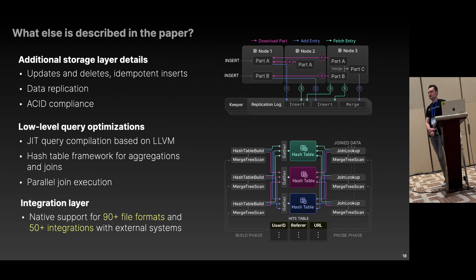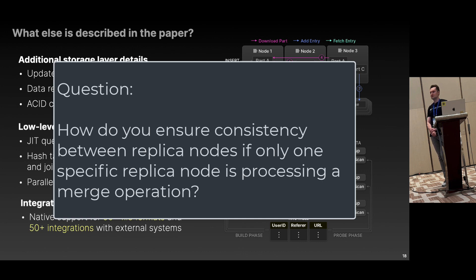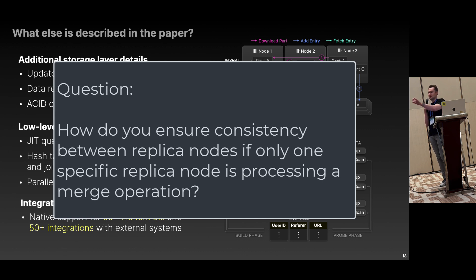Question: Since you only offer eventual consistency, if only one node is performing the merging operation, how do you ensure the results can be applied to other nodes that were not selected for merging? Answer: It is not only eventual consistency. When you do a SELECT query it takes a snapshot of the set of data parts and uses this snapshot for the select. Until the select ends, these data parts will remain. All data parts are immutable, so merges only create new data parts and then atomically swap them in the actual snapshot. We also offer quorum inserts and a mode of operation with shared storage, where all replicas immediately see the new data — providing immediate consistency.